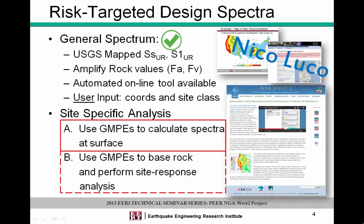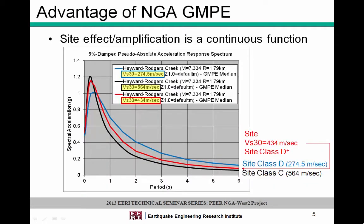Now we're really bringing in shear wave velocity effects. The other approach is to do a site-specific analysis for a rock site at the reference base and then do a site response analysis, but I'm not going to focus on that. The most beautiful feature of these ground motion prediction equations is the continuous function of shear wave velocity. Using just a single proxy value of Vs30, if your site is somewhere between site class C and D, you can actually have a better representation of the hazard at the site.